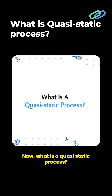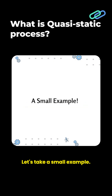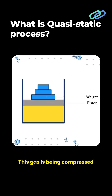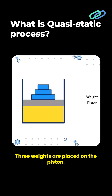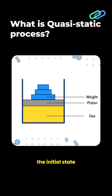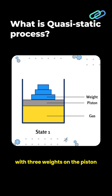What is a quasi-static process? Let's take a small example. Consider a cylinder filled with gas being compressed using a piston. Three weights are placed on the piston, which regulates how much pressure is applied. Let's call the initial state with three weights on the piston as state 1.